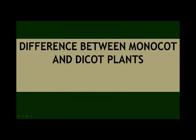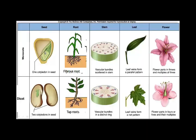What is the difference between monocot and dicot plants? Look carefully at this table — it will help us learn. The seed of a monocot plant has only one seed leaf, meaning one cotyledon, while dicot plants have two seed leaves, meaning two cotyledons.